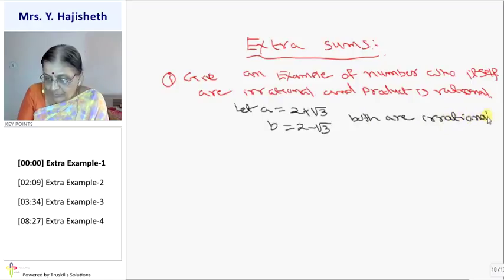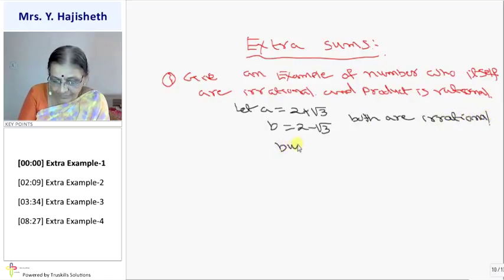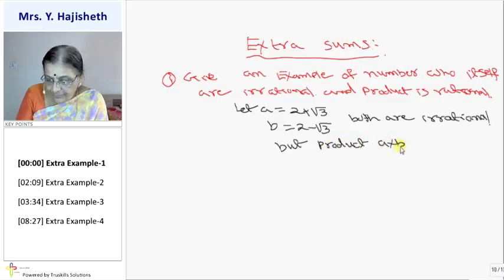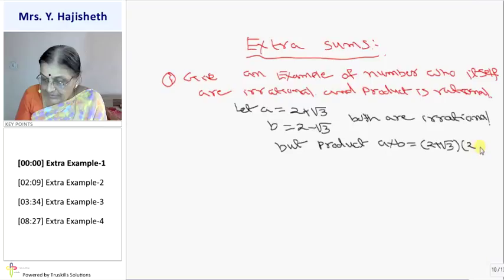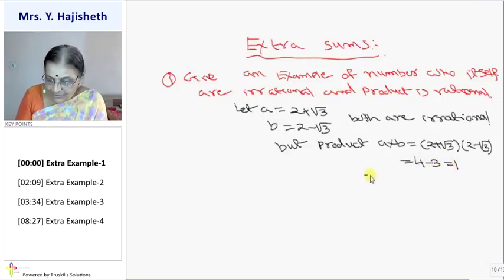But if I find out the product of them, product A into B is 2 plus root 3 into 2 minus root 3. What rationalization factor comes in. 2 plus, A plus B into A minus B is A square. That is 4. Minus B square that is 3. That is 1. So it is a rational.